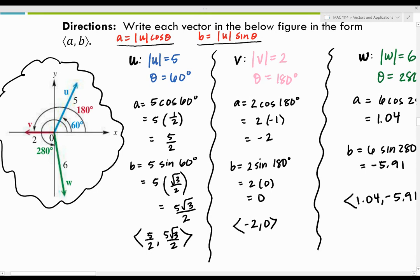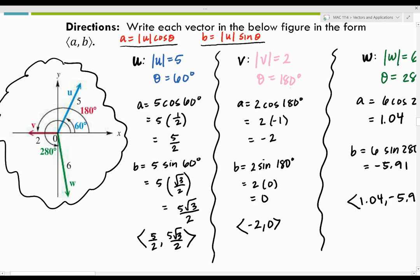For vector V, looking at the diagram, the magnitude is 2 and the direction angle is 180 degrees. Plugging both values into the formulas gives a horizontal component of negative 2 and a vertical component of 0. Again, 180 degrees is a unit circle angle, so I left the answer in its exact form.